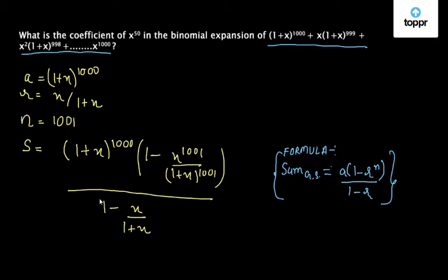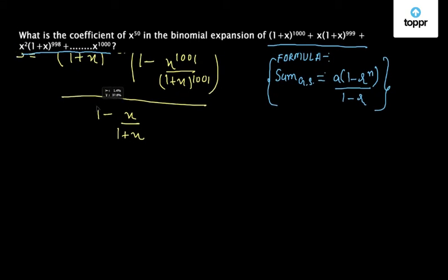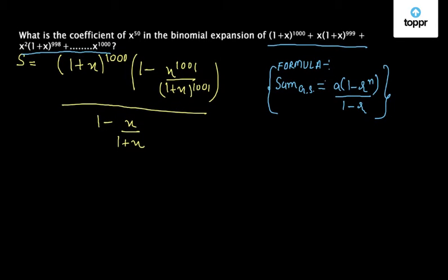You could just match it to the formula written on the right hand side of the screen. Now we'll just simplify this equation. It comes down as S = (1 + x)^1001 - x^1001. I'll call it equation 1.